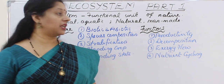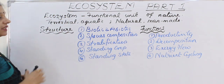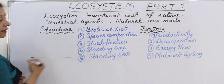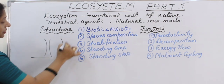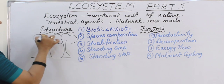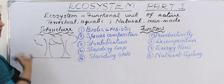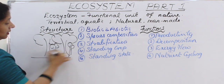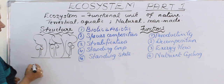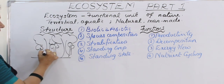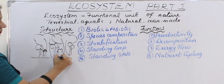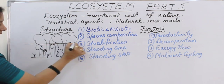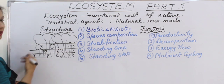Third is called stratification. Stratification means it is a kind of vertical distribution. For example, if you see a forest, there are huge trees with huge canopies. There will be small trees also below that. The next level there will be shrubs and there will be herbs also. So if you see different levels, the plants are distributed — this vertical distribution is called stratification.